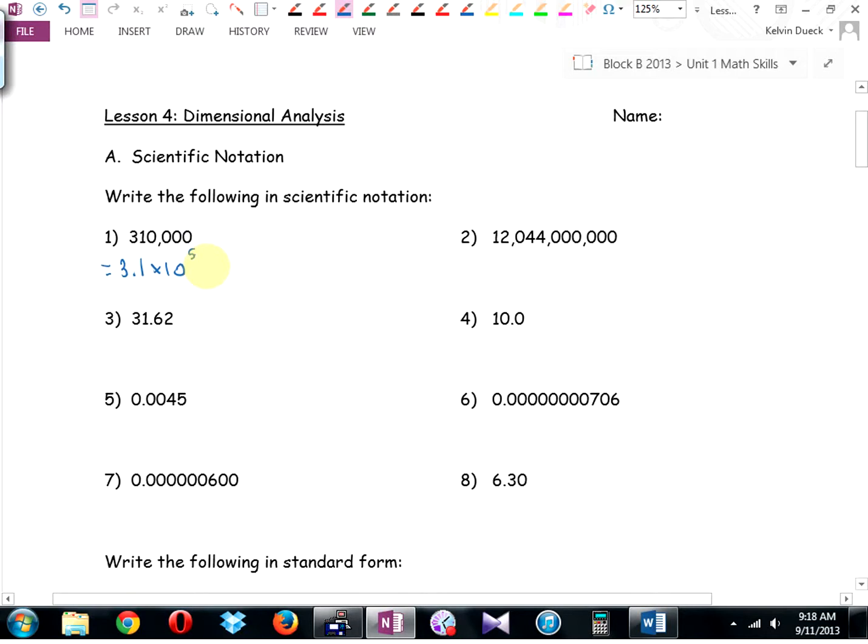How many sig figs is example two? Five. So I'm going to have to write 1.2044 times 10 to the what? Counting: 1, 2, 3, 4, 5, 6, 7, 8, 9 times 10 to the 10.